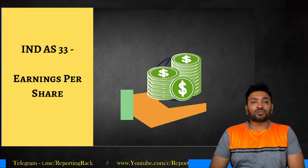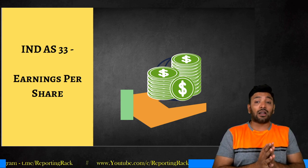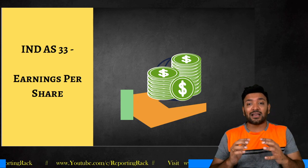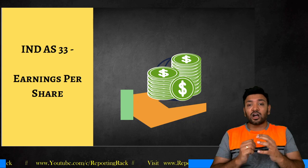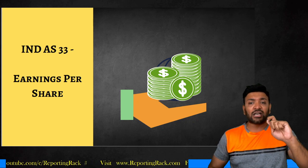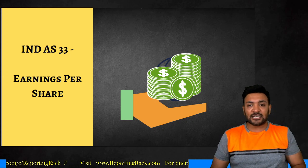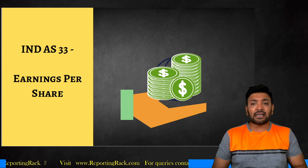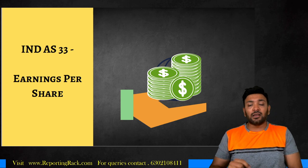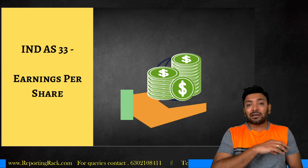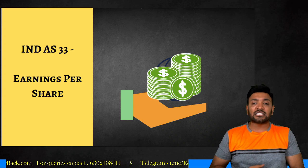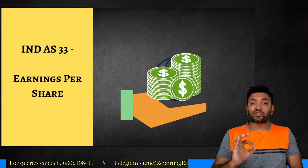Today's session we are going to discuss Ind AS 33. This is a very peculiar standard because Ind AS 33 deals with something called earnings per share. The first thing I want to bring out is that this standard is purely a presentation and disclosure standard. You don't recognize earnings per share — EPS is not an asset or a liability to be recognized in the books of accounts.